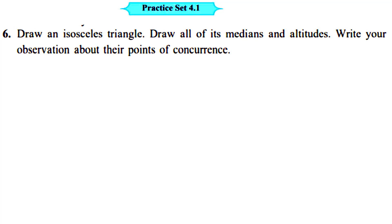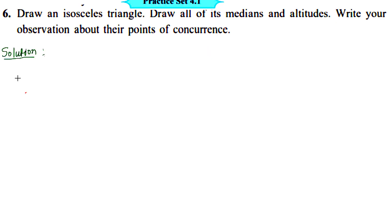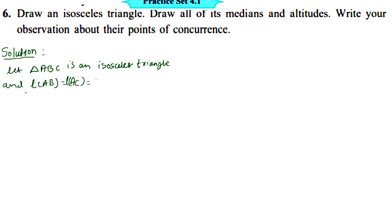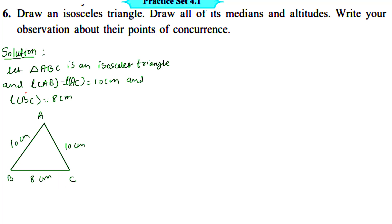Draw an isosceles triangle with all of its medians and altitudes. Write your observations about their point of concurrence. Let triangle ABC be an isosceles triangle where length AB equals length AC equals 10cm, and length BC is the base which is 8cm. First draw the rough figure. Let us suppose that this is triangle ABC: side AB is 10cm, side AC is also 10cm, and side BC is 8cm. This is an isosceles triangle.